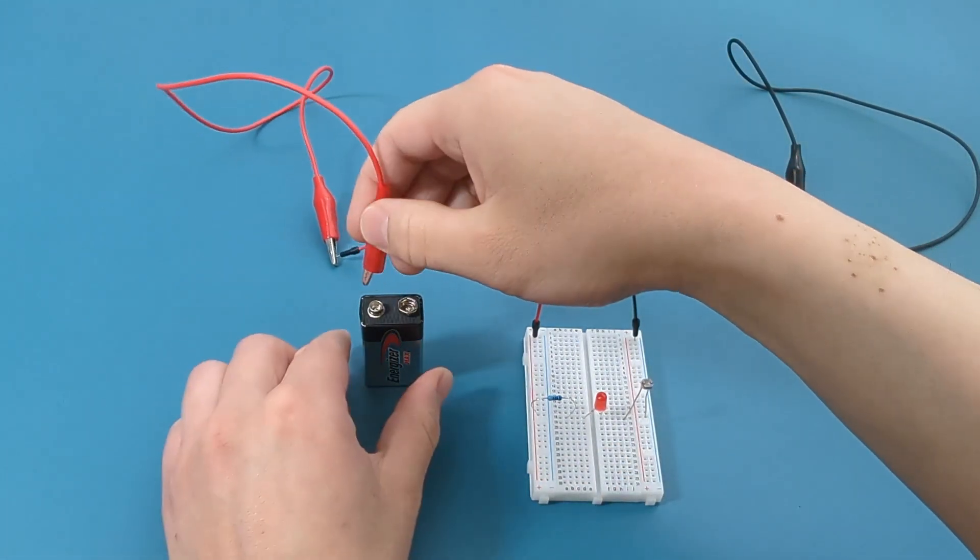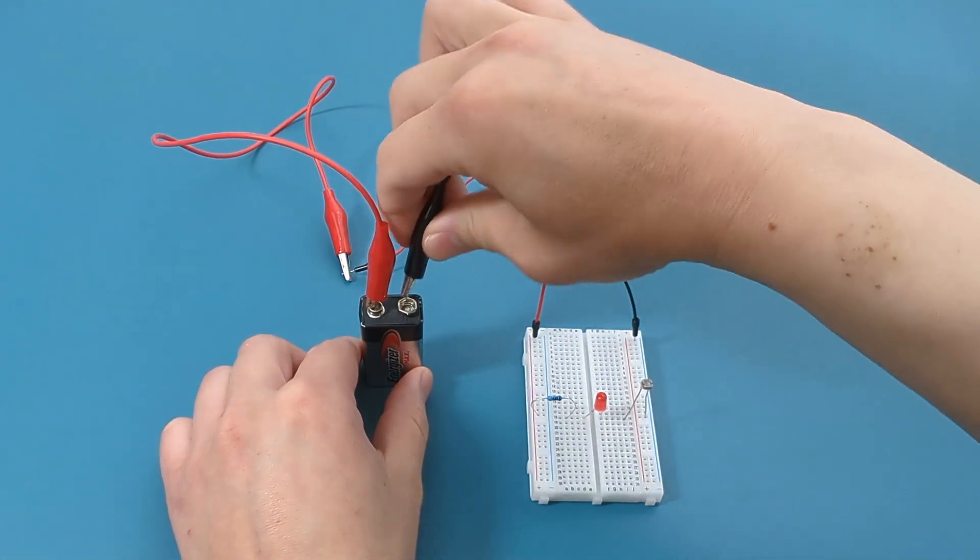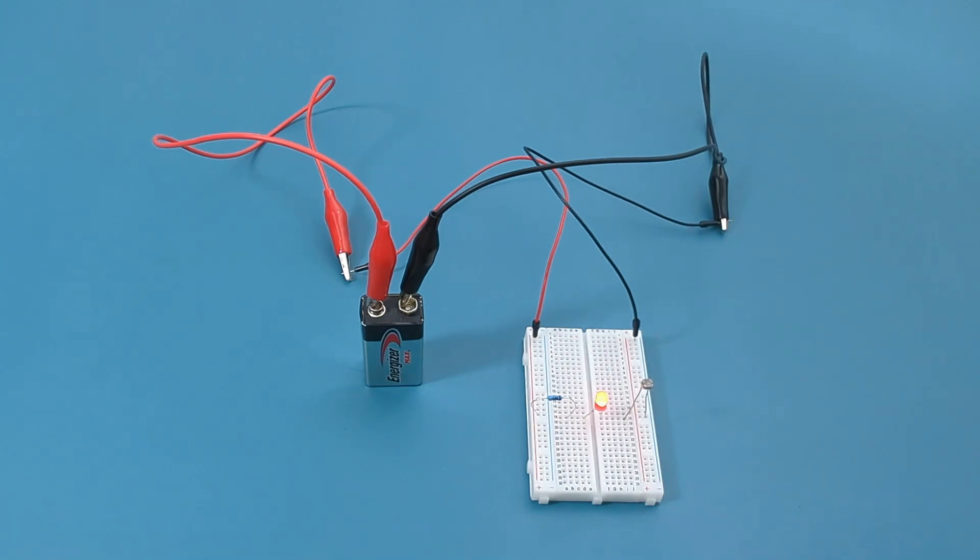Connect the red jumper wire to the positive terminal of the 9 volt battery. Connect the black jumper wire to the negative terminal of the 9 volt battery. Since we have the circuit properly connected, the LED lights up.